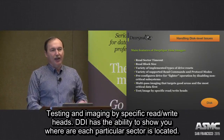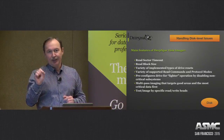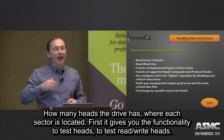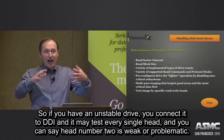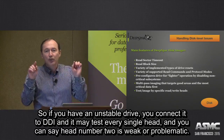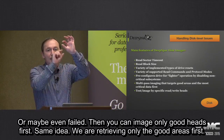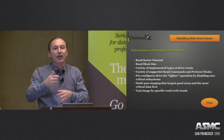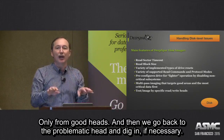Testing imaging by specific read/write heads. DDI has the ability to actually show you where each particular sector is located — how many heads the drive has and where each sector is located. First of all, it gives you the functionality to test read/write heads. If you have an unstable drive, you connect it to DDI and it may test every single head, and you will see, okay, head number two is weak or problematic, or maybe even failed entirely. Then you can still image only the good heads first. We are only retrieving all the good areas first, only from good heads, and then we can get back to the problematic head and dig in if necessary.